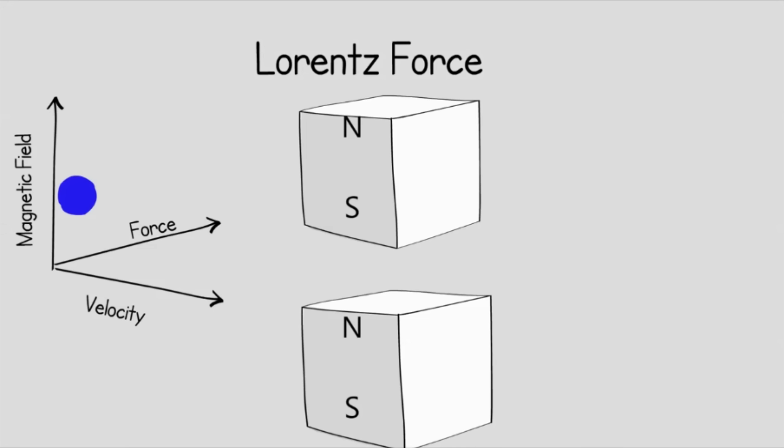And it's called the Lorentz force. When an electron moves, it creates its own magnetic field. Now that magnetic field is going to oppose the magnetic field upward like this at a right angle.